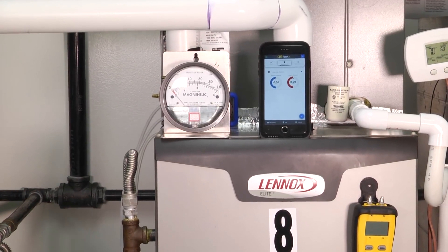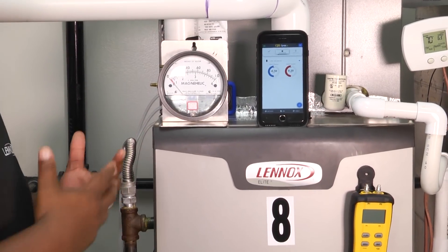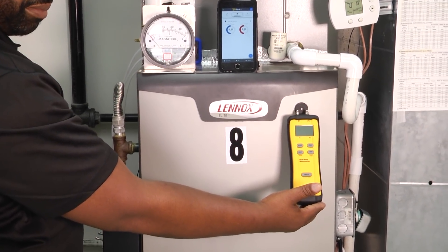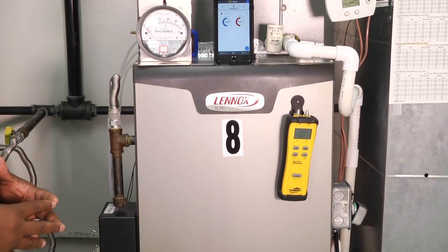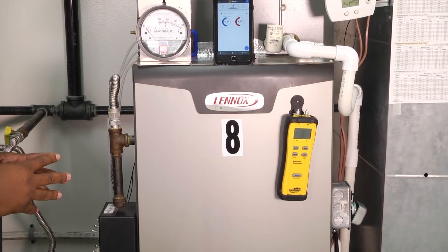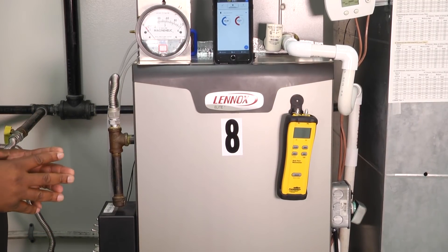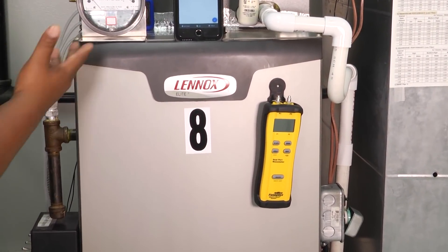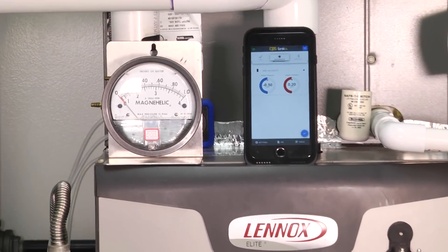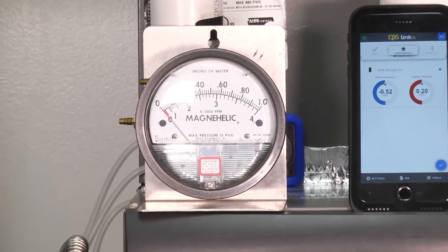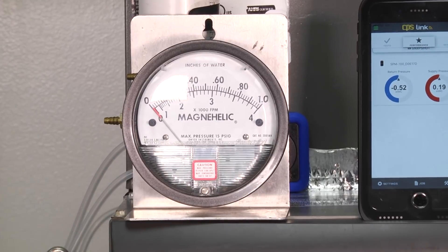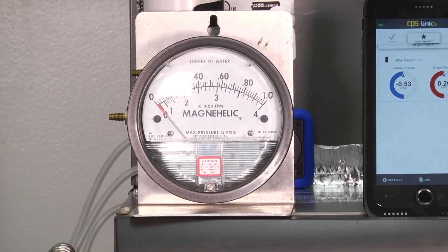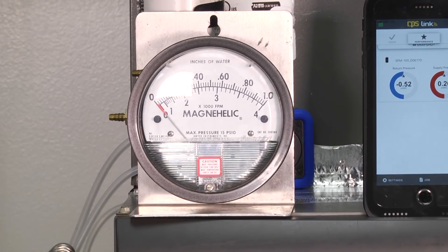There are also digital manometers available on the market made by different companies and manufacturers. Some of you who have been around for a while may even remember one of these guys - it's called a magnehelic. There are cases where things are so small and tiny that it's very hard to get a reading on digital devices, but a magnehelic will pick up things that are very small.